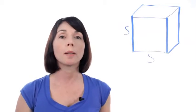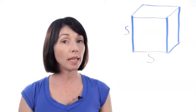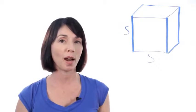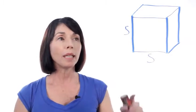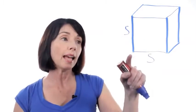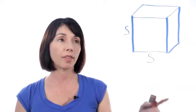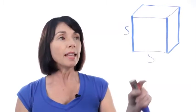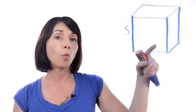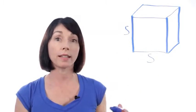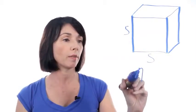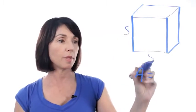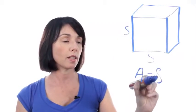A cube is a box, and what makes it a cube is that each face of the box is a perfect square. That means every edge of the cube is the same length, and we'll call that length s. The area of one of the faces is just the area of a square, which is s times s, or s squared.